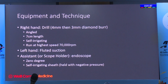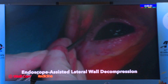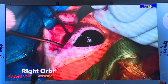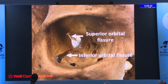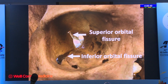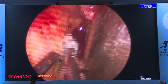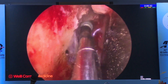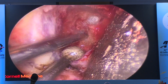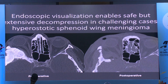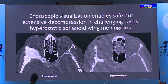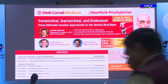In the right hand, holding usually a 4mm drill to start then a 3mm drill at the apex—an angled, self-irrigating drill. In the left hand, the suction clears your field of view; the assistant holds the endoscope or you can use a scope holder. Using the scope, I feel much more comfortable getting a very deep decompression with wide dural exposure, and for challenging cases it may prevent the need for a craniotomy. For standard thyroid eye disease it allows you to be safer but also more aggressive in deep lateral wall decompression.